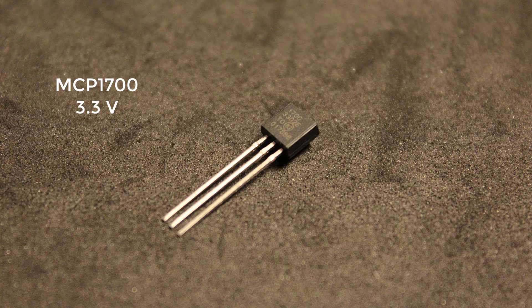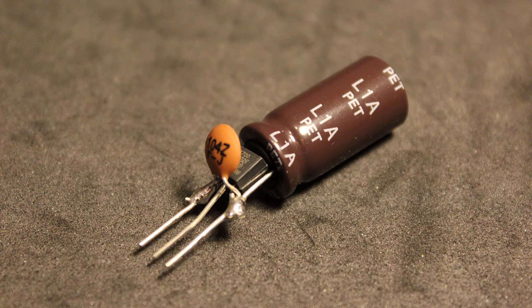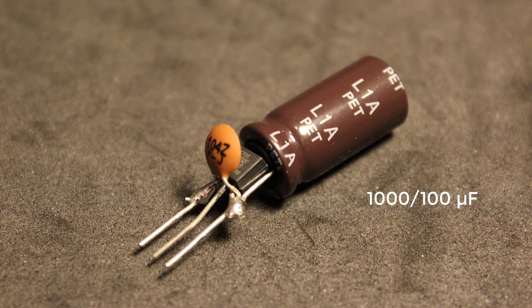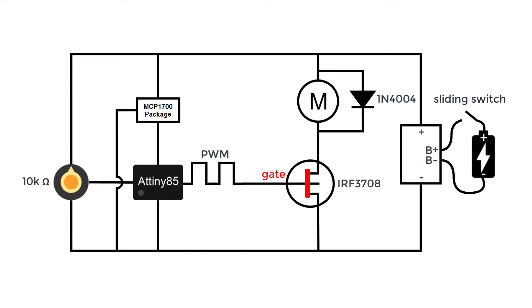I used the MCP1700 3.3 volts voltage regulator with two capacitors soldered directly on it: a 1000 or 100 microfarad capacitor and a 100,000 picofarad capacitor to deal with voltage spikes and keep the signal smooth. And that right there is the full circuit for this project.